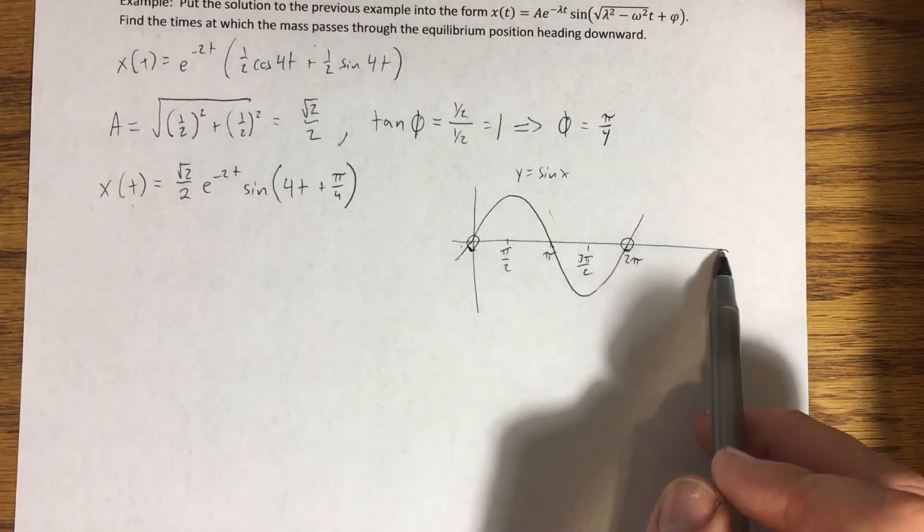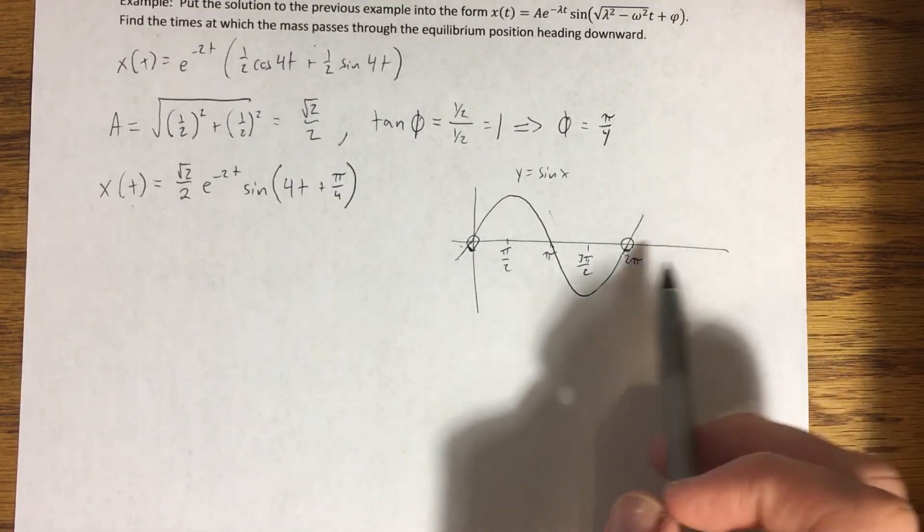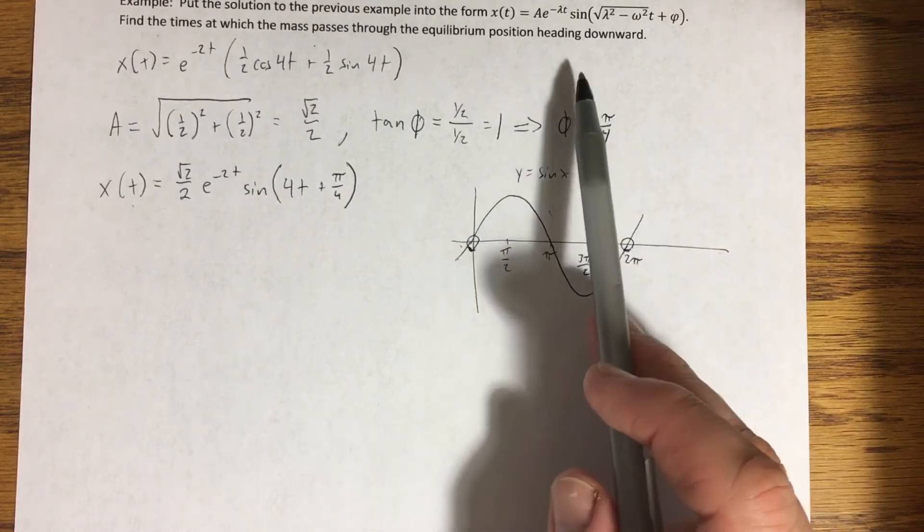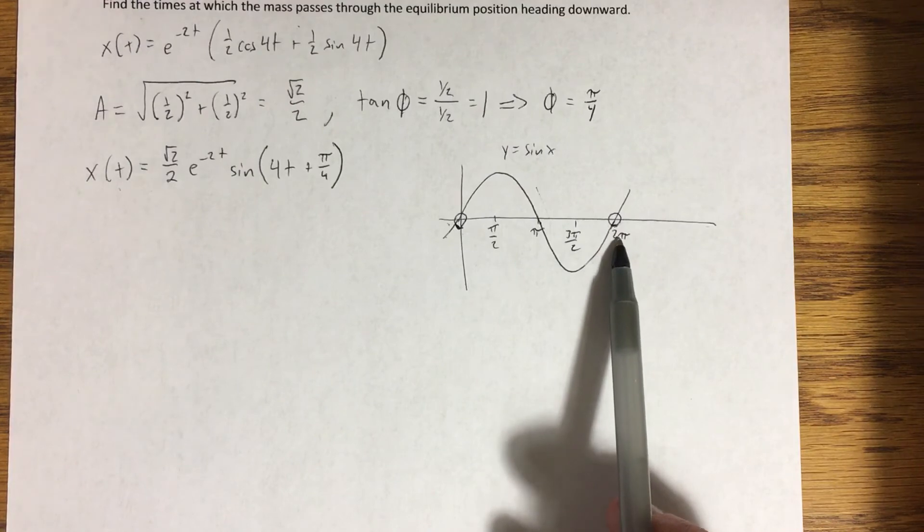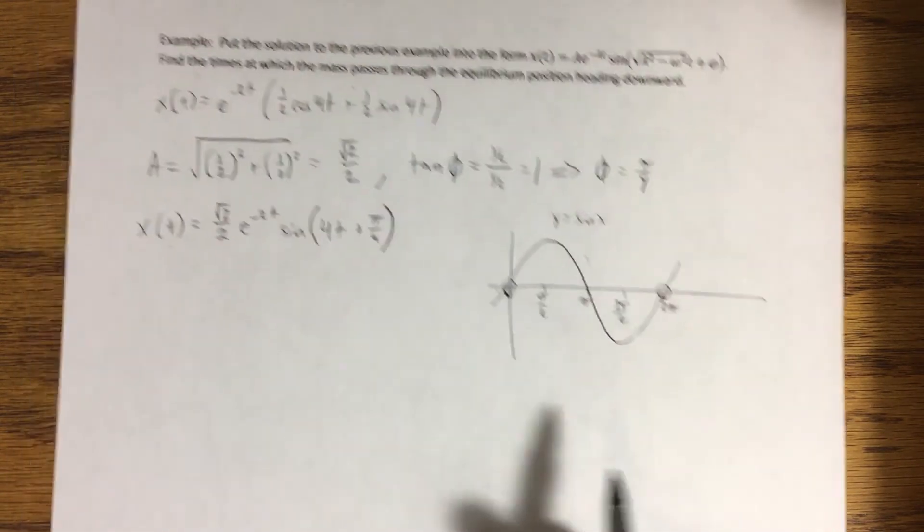Okay. And then we would see the same thing happening again at four pi when we do one more cycle of this thing. So it looks like the type of behavior that we're looking for happens every time we reach a multiple of two pi. Okay. So what does that tell me?